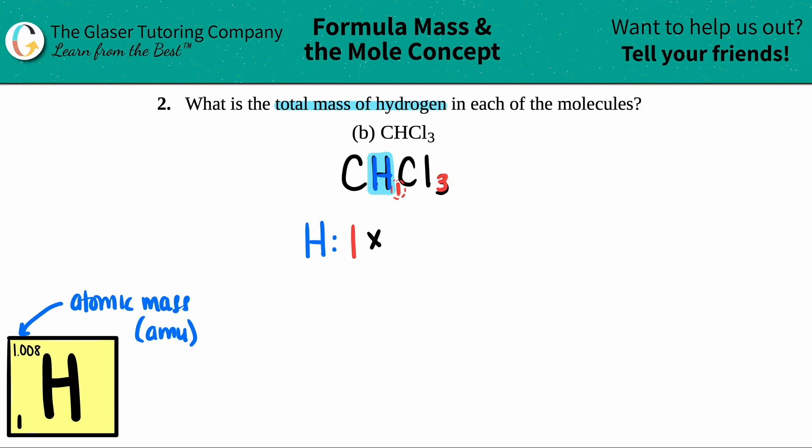AMU is the smallest unit of mass on the atomic level, things that we can't see with the naked eye. So I'm just going to take this number and times it by how many hydrogens I have.